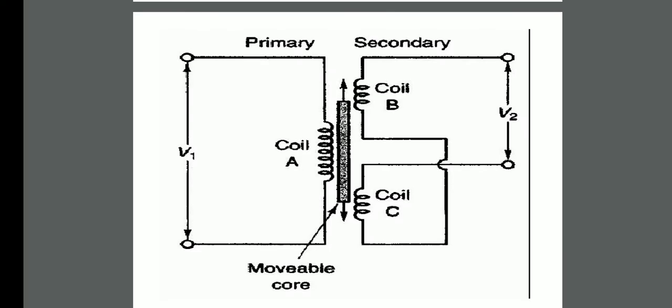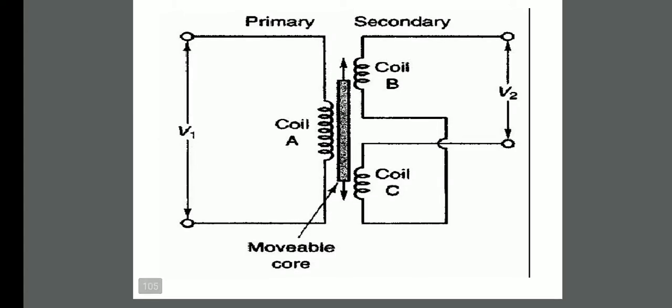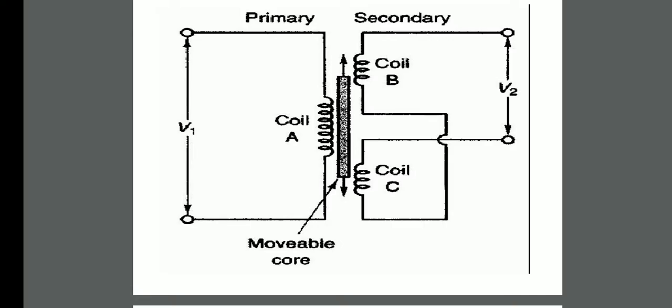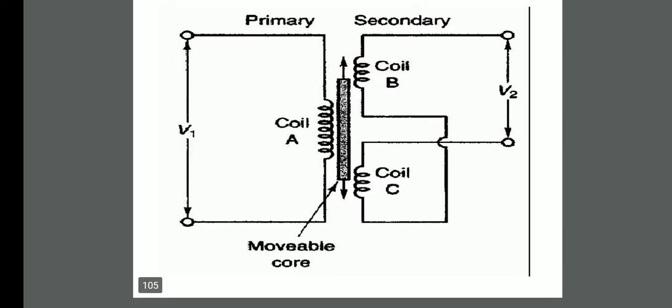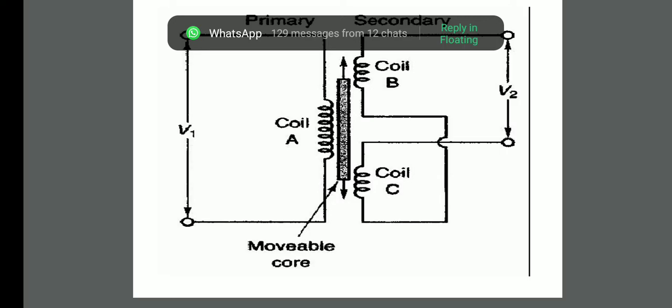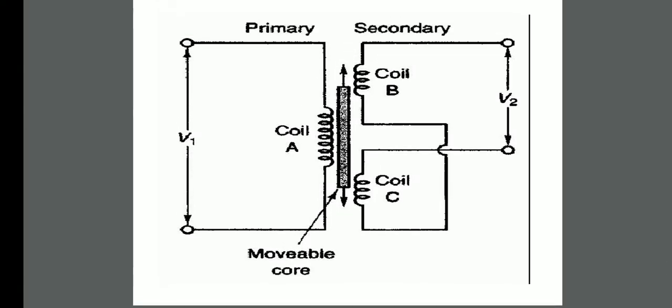The principle works like this: whenever we apply an AC voltage across the primary winding — V1 voltage is applied across coil A, which is the primary winding — there will be a change in flux in the air gap due to alternating current. That change in flux induces an EMF in both secondary coils B and C. That is what is called mutual inductance. The output voltage from coils B and C is represented as V2, which gives the measure of the displacement at the point under reference.